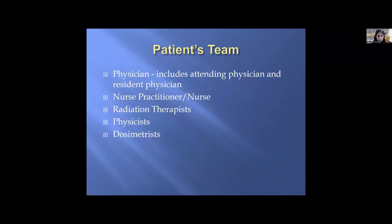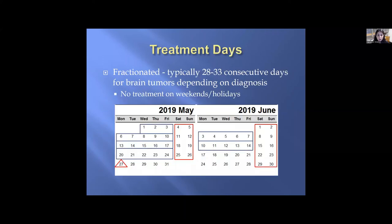The patient's team consists of the attending and resident physician, nurse practitioner or nurse, radiation therapists who place the patient on the treatment table and deliver radiation daily, and physicists and dosimetrists who help with the treatment plan behind the scenes. Treatment days are fractionated, typically 28 to 33 consecutive days, excluding weekends and holidays for brain tumors.